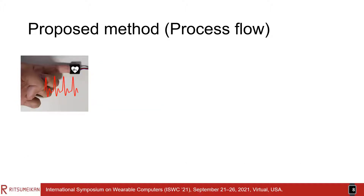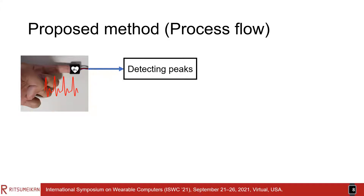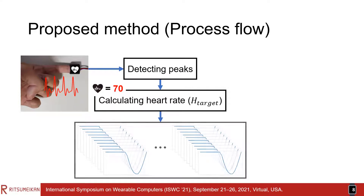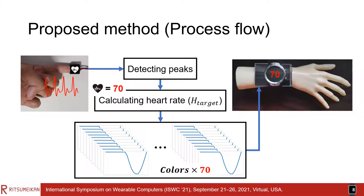I will explain the flow of the proposed method. First, the user wears an additional PPG sensor to acquire data and detect peaks. The system calculates the heart rate by counting the number of peaks. Next, prepare a number of colors equal to the calculated heart rate, and draw them on the display in one minute. Finally, the user can get the same heart rate on the smartwatch as the one obtained from the additional sensor.